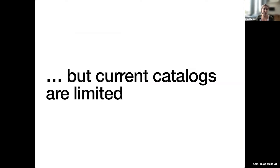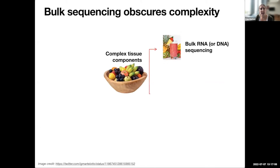But the truth is they're currently a bit limited. Today we're going to hear from three speakers that I think are really working to make these existing data a little bit more representative of the immense complexity that is encoded in the human genome. The first way that most catalogs are limited is that the majority of them use a bulk sequencing approach, which really can obscure complexity.